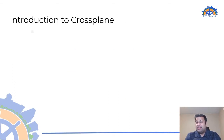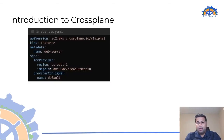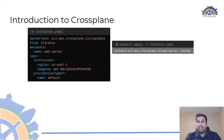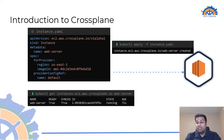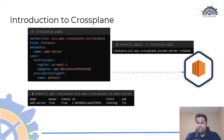Once Crossplane is installed and the provider configured, we can define the configuration of an EC2 instance in AWS using a YAML file. We can make use of native Kubernetes commands such as kubectl create or kubectl apply to provision the instance. To check the status and events of the resource, we can run commands such as kubectl get or kubectl describe, just as we would with native Kubernetes objects such as pods, deployments, and persistent volumes. Similar to native Kubernetes objects, controllers constantly check the status of these external managed resources and reconcile them in case of drift.